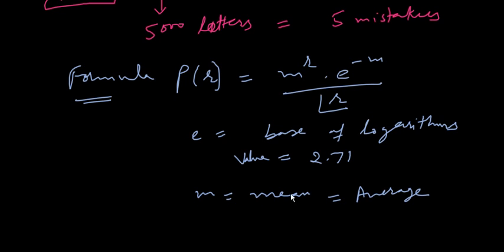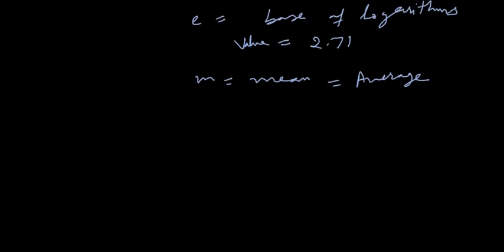So first of all we will calculate the average, then multiply with this, and r factorial we can calculate for two, three, four trails. I am just taking an example. Number of total typing words.